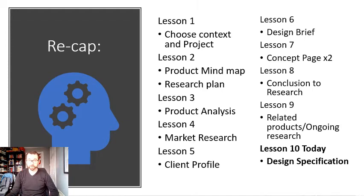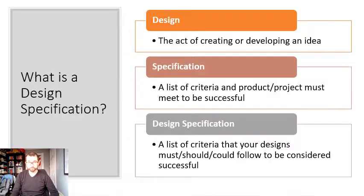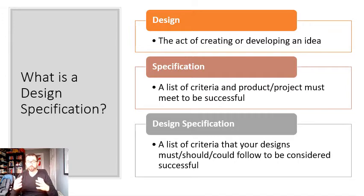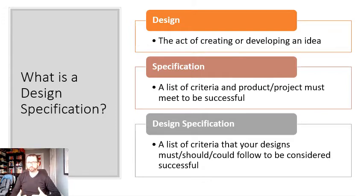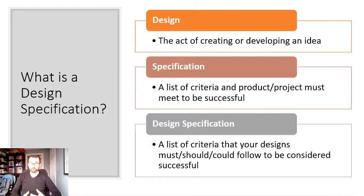Where does the specification sit in the grand scheme of the entire project, and what is a specification? The specification is split into a couple of different areas — there are two specifications we do in a project: we have a design specification and a manufacturing specification. Design is the act of creating or developing an idea, normally on paper or pen, or using models or CAD. A specification is a list of criteria a product must meet to be successful. So a design specification is a list of criteria that your designs must, should, and could follow to be considered successful.